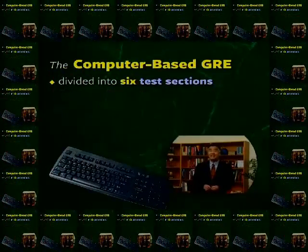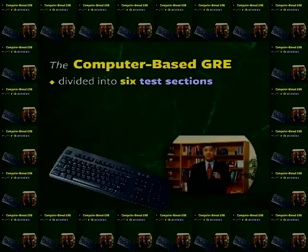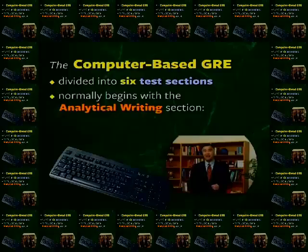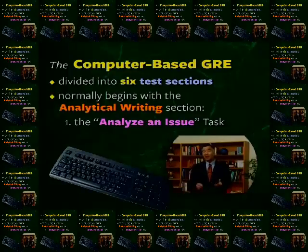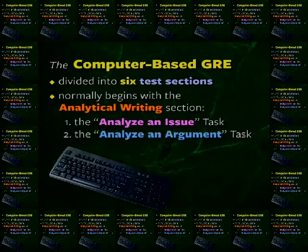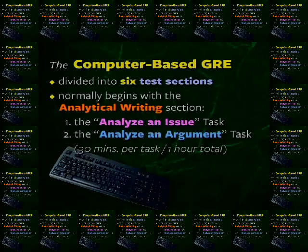The computer-based exam is divided into six test sections. The test normally begins with the analytical writing section. This section includes two parts, each of which requires you to write an essay. One part is called the Analyze an Issue task, the other is called the Analyze an Argument task. You'll have 30 minutes for each task, or a total of one hour for this first section of the exam.